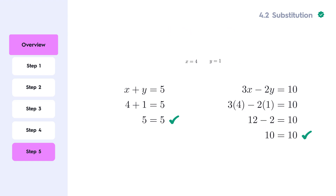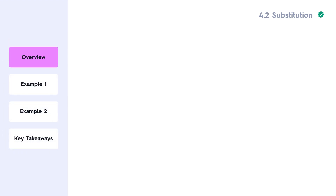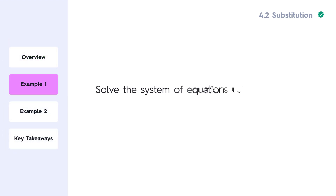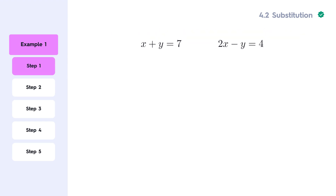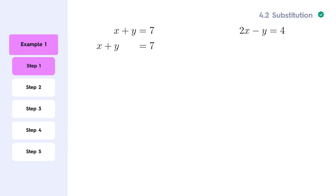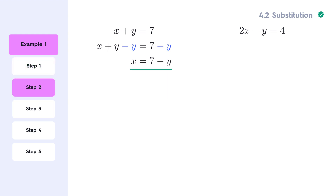Let's see how it works on a few examples. Let's begin with solving the system of equations using substitution. First, we solve one equation for one variable. Let's solve the first equation for x. We can start with subtracting y from both sides. This gives us x equals 7 minus y.